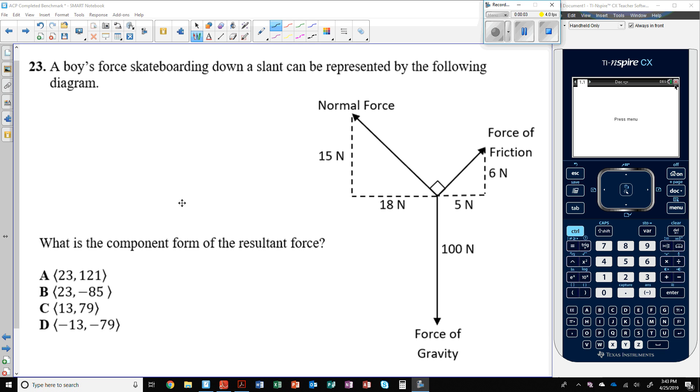Number 23. A boy's force skateboarding down a slant can be represented by the following diagram where we have a normal force, a force of friction, and a force of gravity. What is the component form of the resultant force?